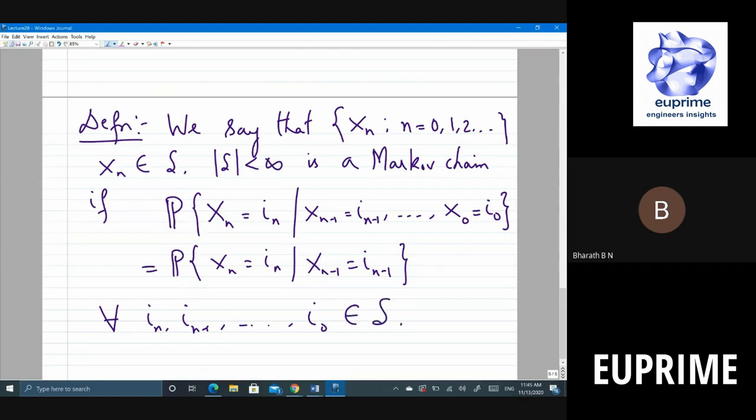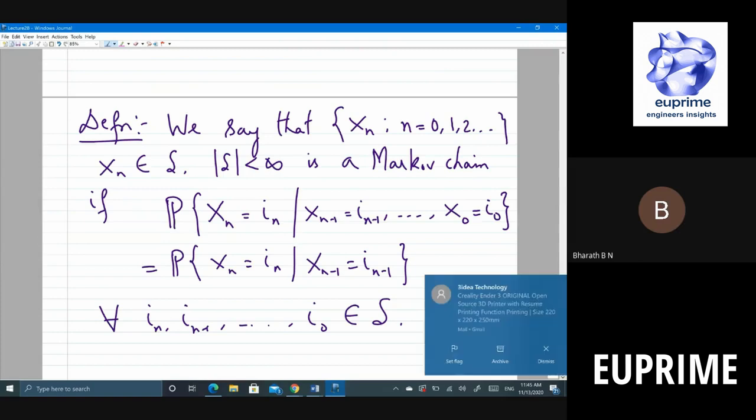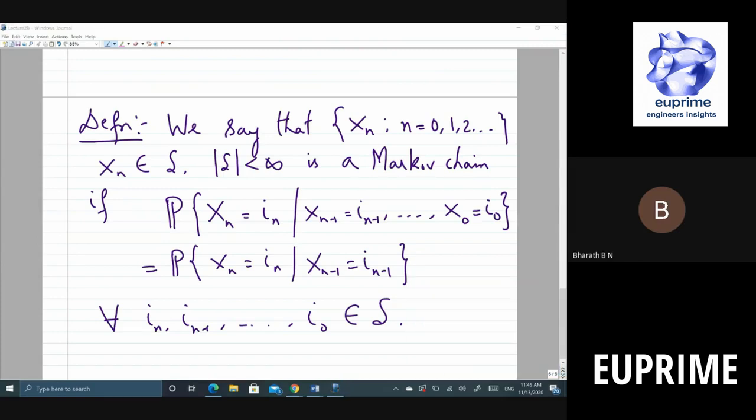We say that it's a Markov chain. Is this fine, this definition? This is conditional probability of A given B, which is probability of A and B divided by probability of B. Any questions?